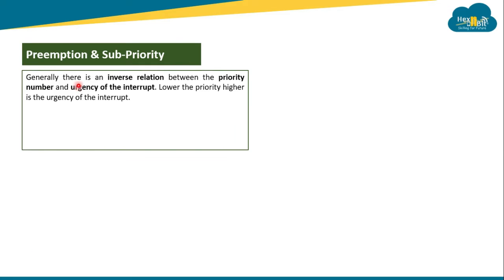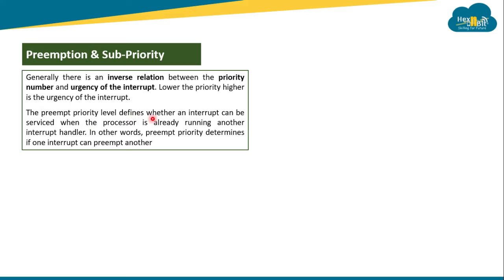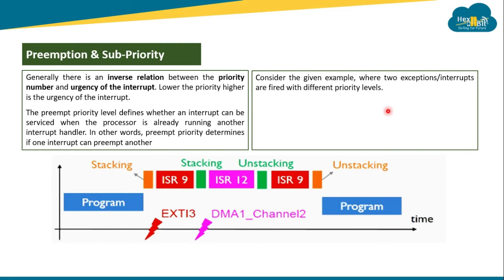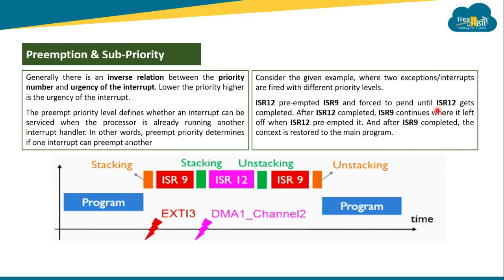There is an inverse relation between priority number and urgency: a lower priority number means higher urgency. The preemption priority level defines whether an interrupt can be serviced when the processor is already running another interrupt handler — in other words, it determines if one interrupt can preempt another. Consider an example where two interrupts are fired: ISR 12 preempts ISR 9 and forces it to pend until ISR 12 completes.